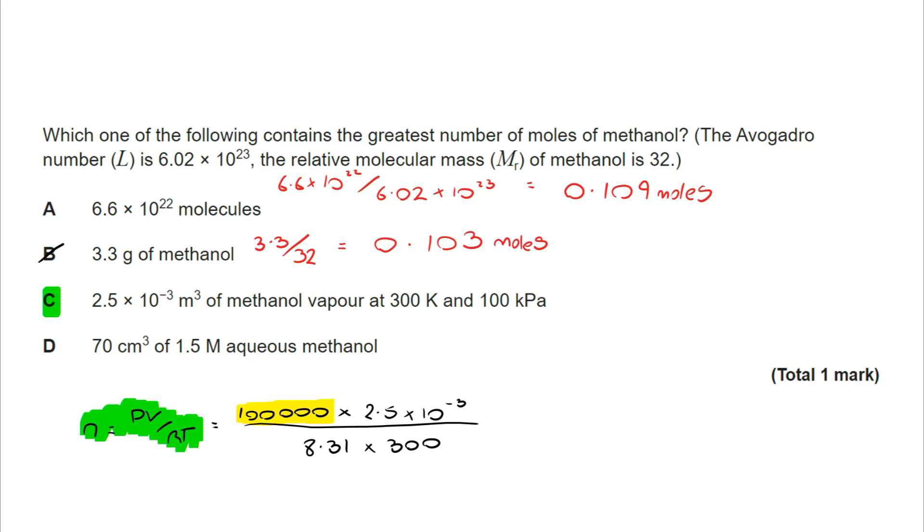I can also look at C, which is an ideal gas equation. So I do N is PV divided by RT. You can see that I've included 8.31. Now, that would be provided as a matter of course in the exam. You'll also notice that I've changed my 100 kilopascals to 100,000 pascals. My volume is already in metres cubed, so no conversion is needed. And as I go through, I see that I've got 0.100 moles. That's lower than A, so the answer is not C.